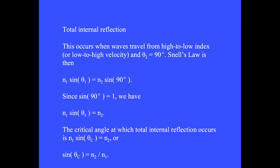Total internal reflection occurs when waves travel from high to low index, or from low to high velocity, and the angle of refraction theta2 is 90 degrees. At that angle, Snell's law is then N1 sine theta1 equals N2 sine 90. Since sine of 90 is 1, we have N1 sine theta1 equals N2.